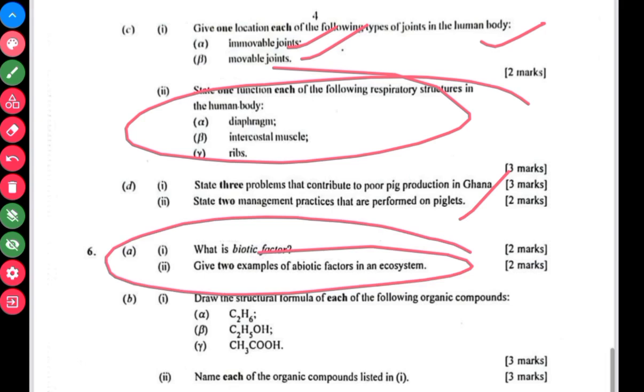Question 4d is looking at animal production as well, piglets. Question 6a is looking at ecosystem, biotic factors and examples of abiotic factors.